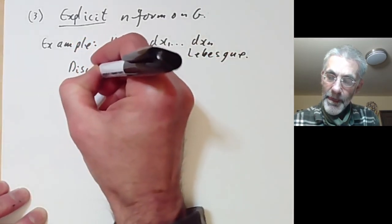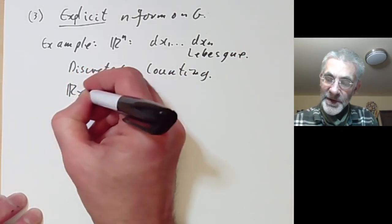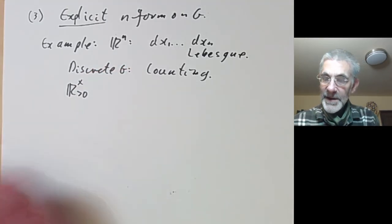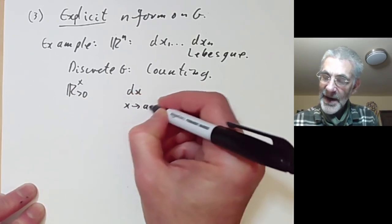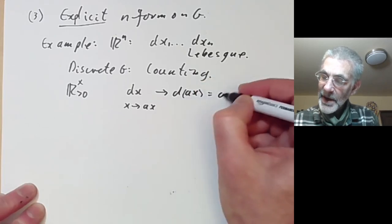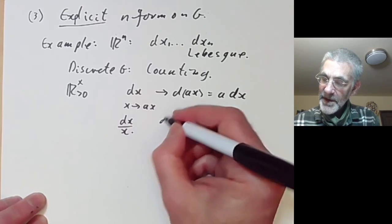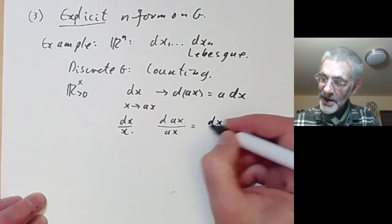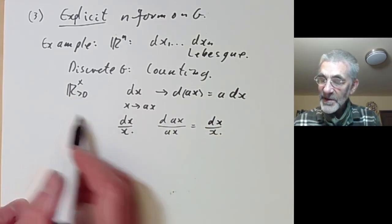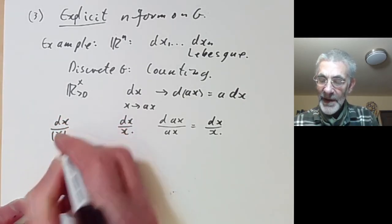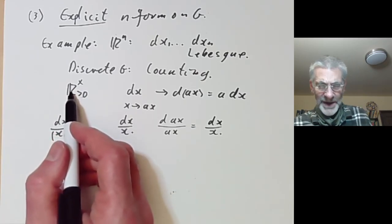For a discrete group G we can just use counting measure. For a slightly less trivial example, let's take the positive real numbers under multiplication. We want a measure that's invariant. We could try dx, but that's no good because left translation means we multiply x by a, so mapping x to ax gives dax = a dx, which is not equal to dx. Instead we try dx/x, and dax/(ax) = dx/x, so this is invariant under left translation. If we include negative reals we would use dx divided by the absolute value of x, though this depends a little on how you orient the negative real numbers.